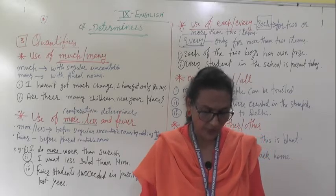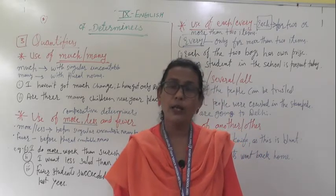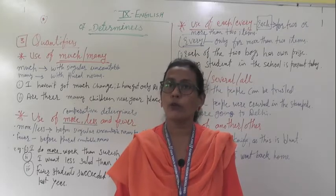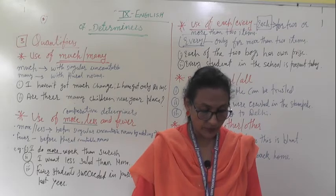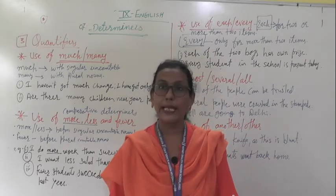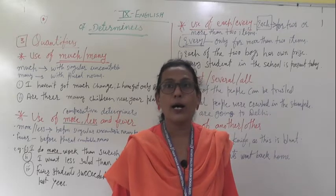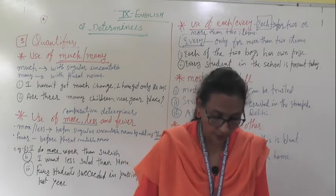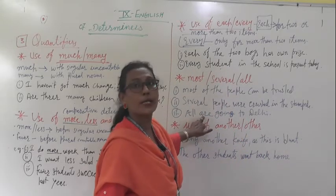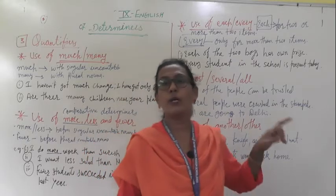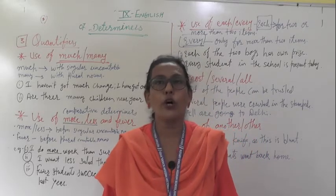'Several people were crushed in the stampede.' 'Several people lost their lives in the tsunami.' Now, all requires a plural verb when used with a countable noun, but requires a singular verb otherwise. For example: 'All are going to Delhi' uses a plural verb. 'All that glitters is not gold' uses a singular verb.